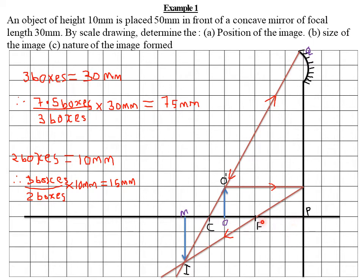Three boxes horizontally represent 30 millimeters, so one box equals 10 millimeters for the horizontal scale. The radius of curvature is always twice the focal length. If the focal length is 30 millimeters (3 boxes), the radius of curvature is 60 millimeters (6 boxes). Counting one, two, three, four, five, six — this is where we place the center of curvature. The radius of curvature is the distance from the pole to the center of curvature.